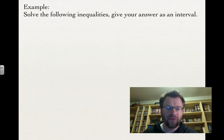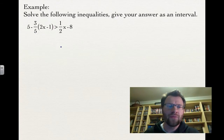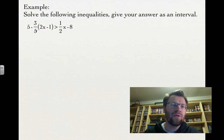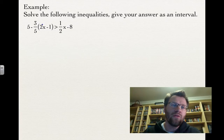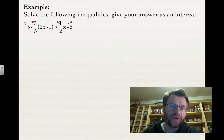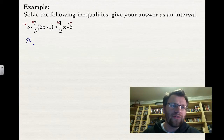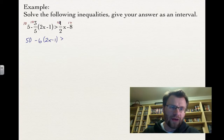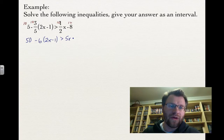A couple of examples: solve the following inequalities and give your answer as an interval. Our first one is 5 minus three-fifths times (2x minus 1) is greater than one-half x minus 8. As a reminder, if you don't like fractions, you can get rid of them — just multiply each term by a common number. In this case, multiply everything by 10. So 10 times 5 is 50; 10 times three-fifths is 6, giving 6(2x minus 1); and 10 times one-half is 5, giving 5x minus 80.